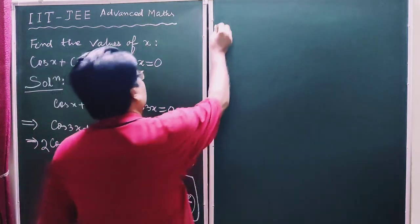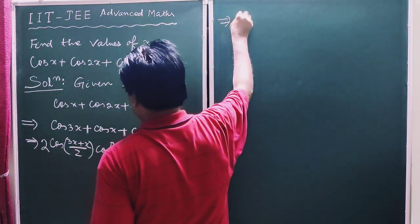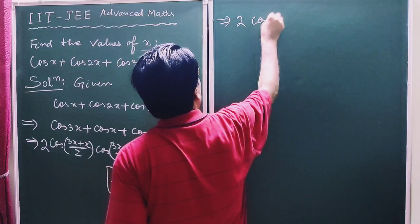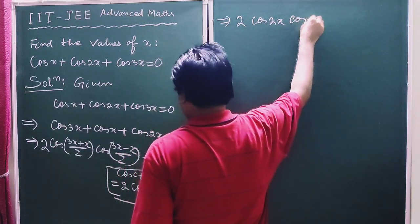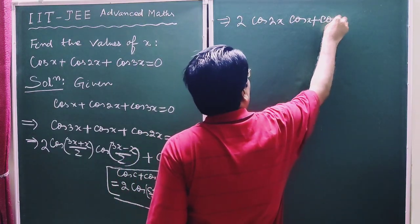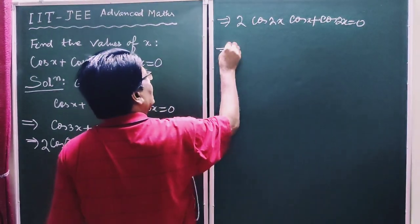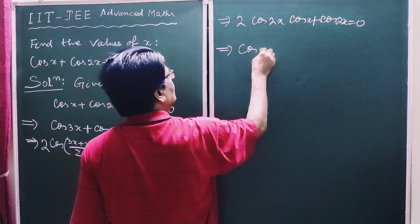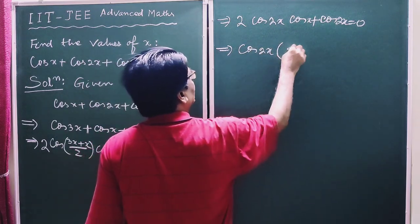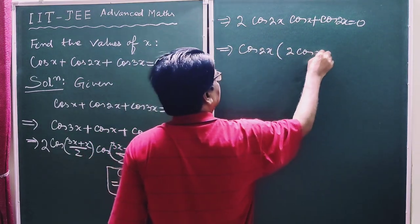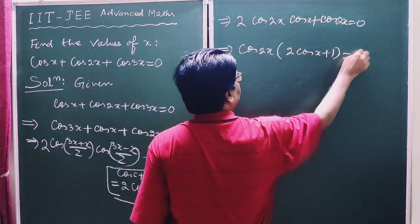This implies 2 cos 2x times cos x plus cos 2x is equal to 0. Now taking cos 2x common, we get cos 2x times 2 cos x plus 1 equals 0.